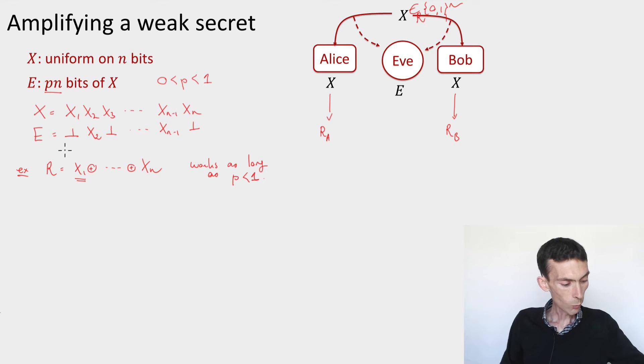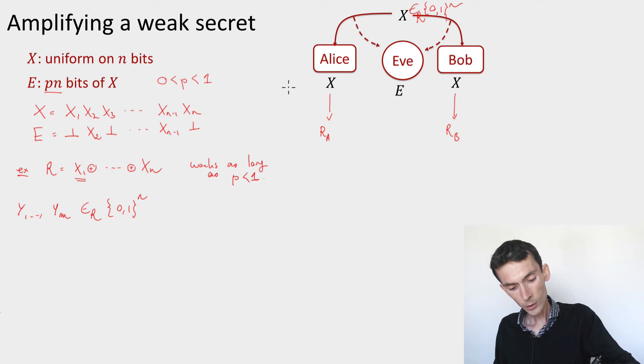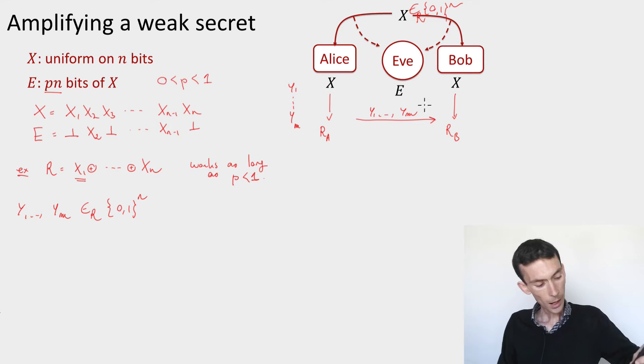So let's see how we could do it. Here's an idea. We're going to choose random strings y_1, ..., y_m at random in {0,1}^n. So this is something that Alice is going to generate on her own. And she's going to ship over to Bob on the public communication channel. And then what they'll do is that they'll set R to be the dot product of x and y_1 and then the dot product of x and y_2, etc., up to the dot product of x and y_m. This way you get an m-bit string.